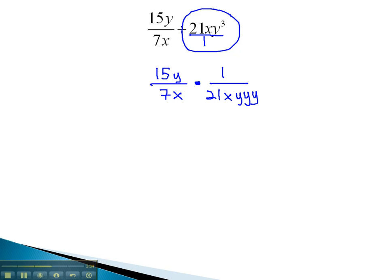Now, we can look to see if there's any reducing available. 15 and 21, both divisible by 3. 15 divided by 3 is 5. 21 divided by 3 is 7. We also see a y in the numerator divides out with a y in the denominator.